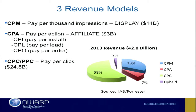The reason we want to talk about revenue models is because types of fraud and security issues relate to the different economic models of how people make money with advertising. We have CPM — cost per thousand impressions — which is the display industry: a 300x250 banner ad or leaderboard banner. CPA, also known as affiliate, stands for cost per action — the advertiser only pays once an action is taken, whether filling out a form, signing up, or buying something. And CPC, cost per click or pay per click — the advertiser pays when a user clicks.